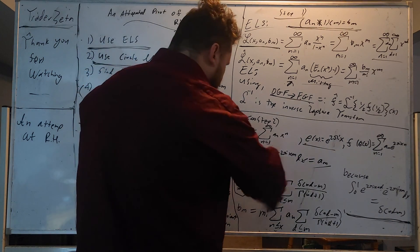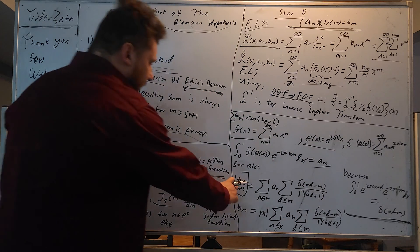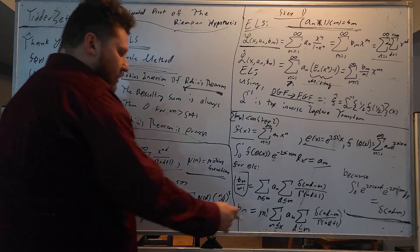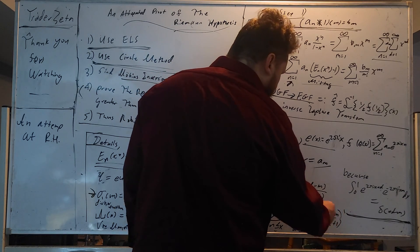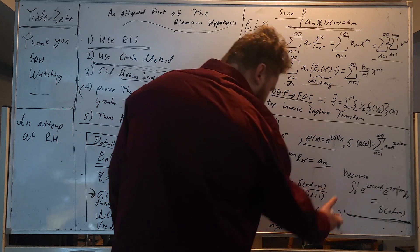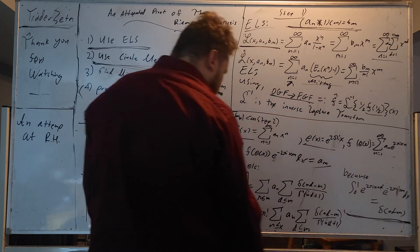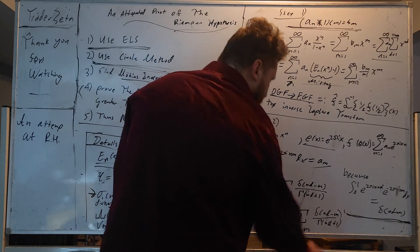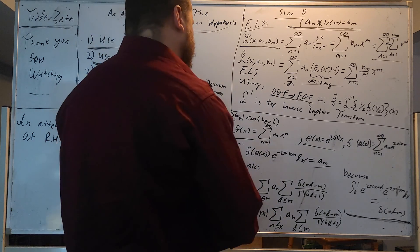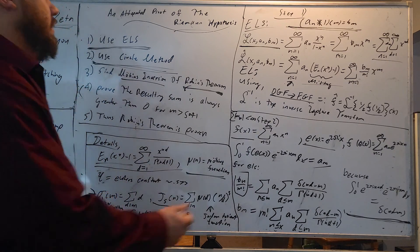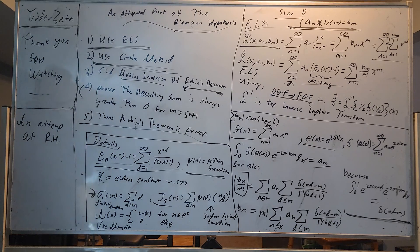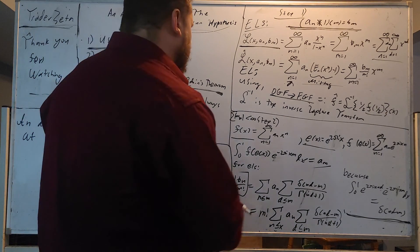Now circle method was used by Ramanujan, Hardy, and Littlewood to solve partitions. Very useful thing where we extract coefficients of these types of generating functions. Usually it's broken up into what they call major and minor arcs. But here we're going to play a different game with this circle method. So it's going to be very interesting. You'll see.